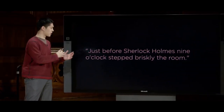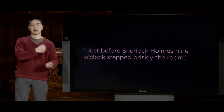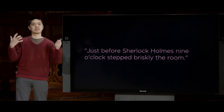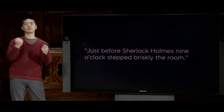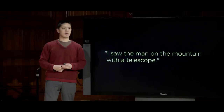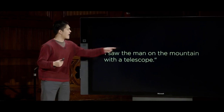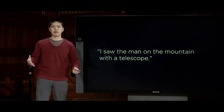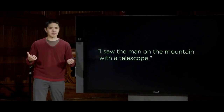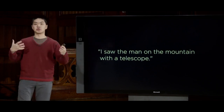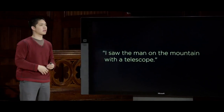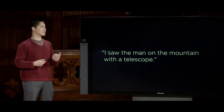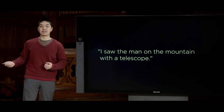Syntax can also be ambiguous — there are sentences that are well-formed but where you could construct multiple different structures. A sentence like 'I saw the man on the mountain with a telescope' is grammatically well-formed, but what is the structure? Is it the man on the mountain who has the telescope? Or am I using the telescope to see the man on the mountain? There is interesting ambiguity here where the same sentence could have two different types of structures.